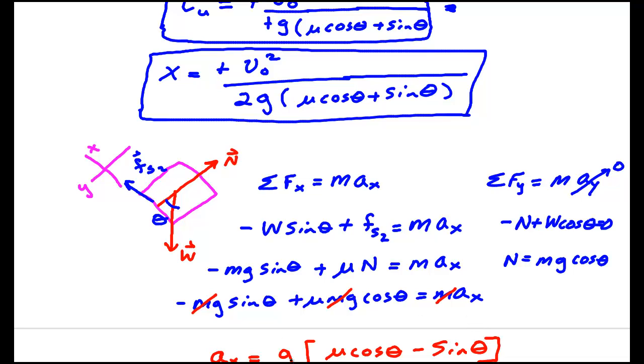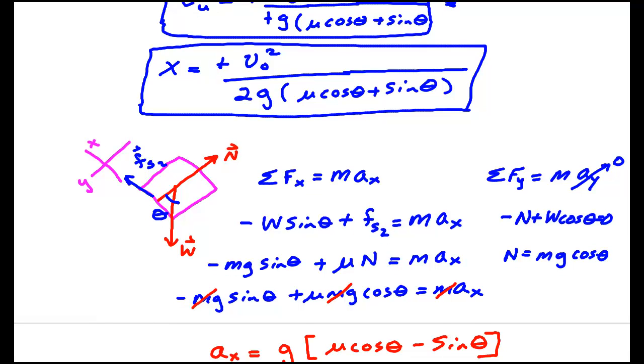So again, this is constant. μ is constant, cosine for a fixed angle is constant. But it's not the same acceleration as before. So I could not work the problem in one step all the way up and all the way back. Because in that case, the kinematic equations would not have been valid because acceleration wasn't a constant.